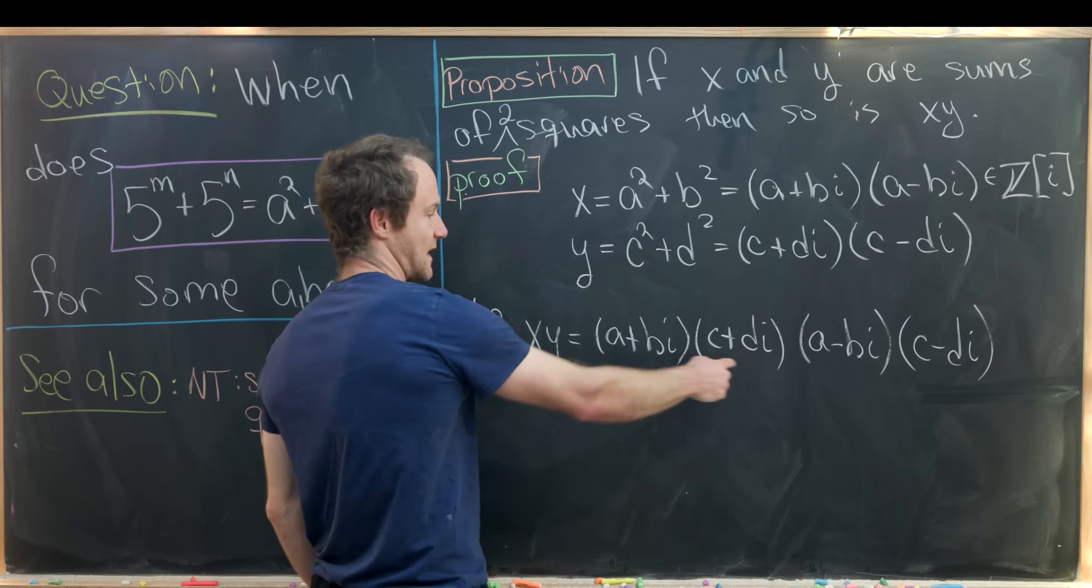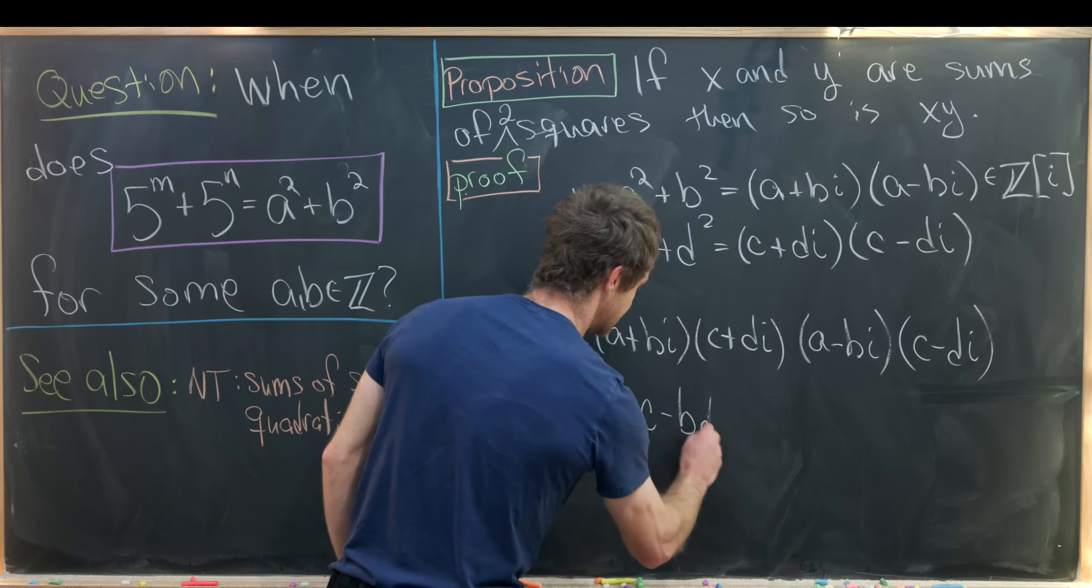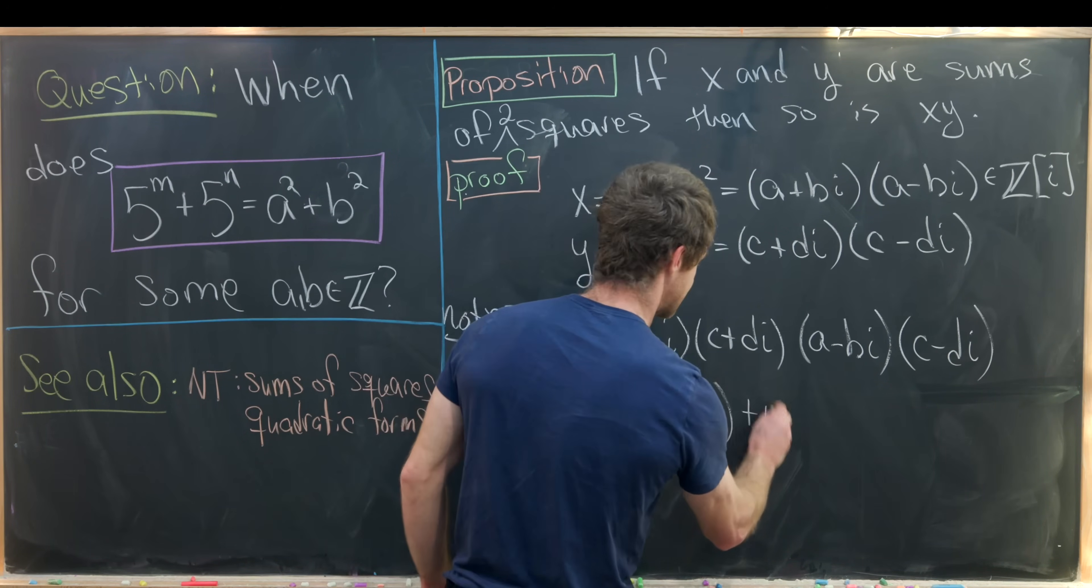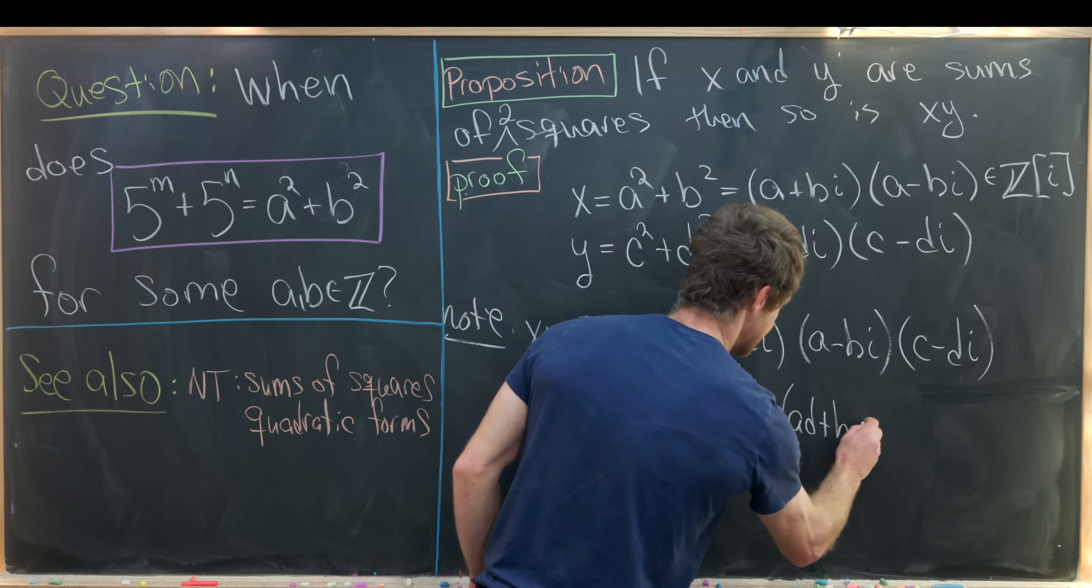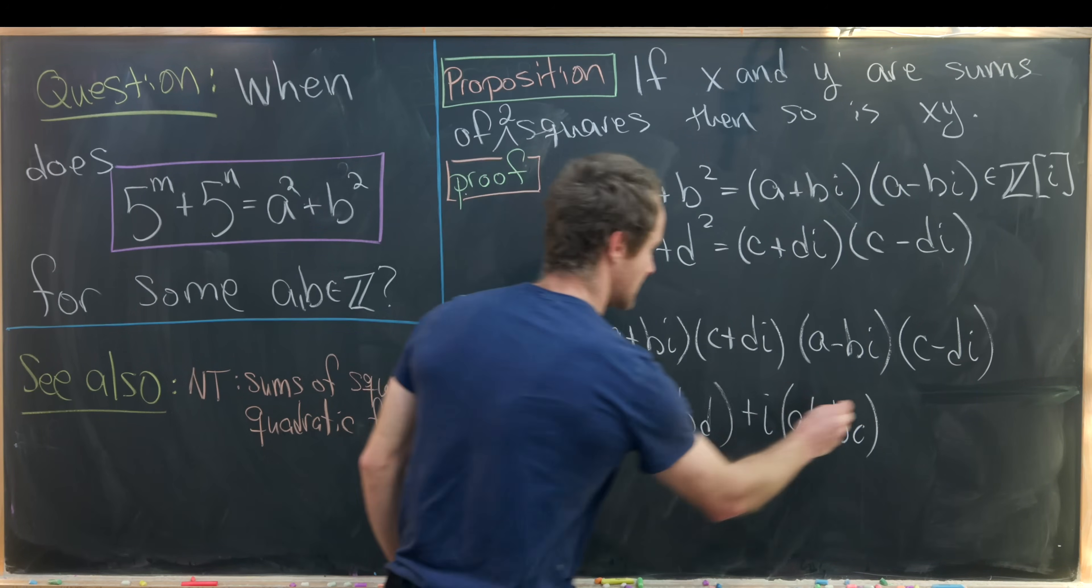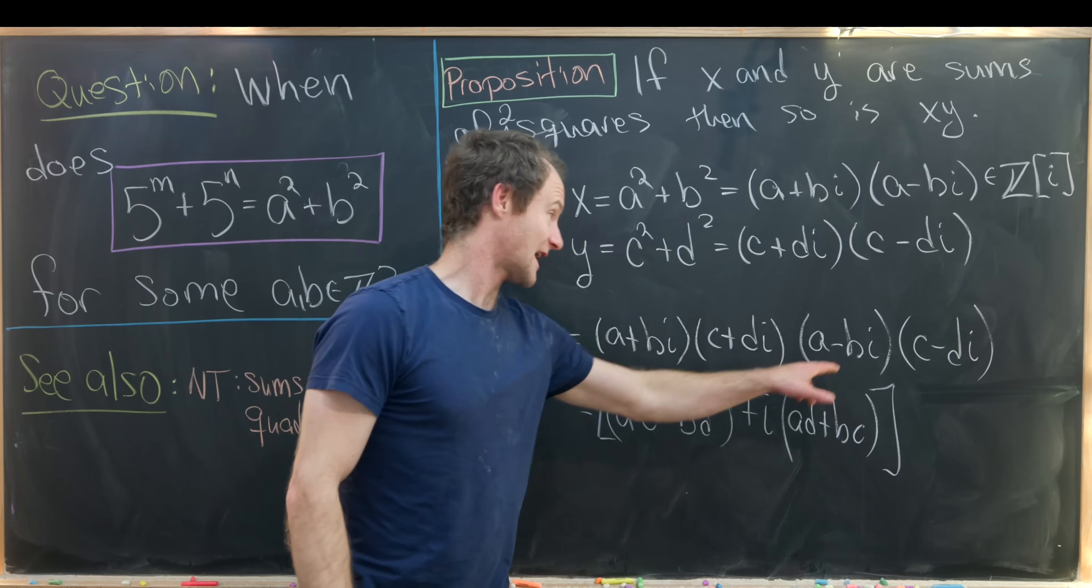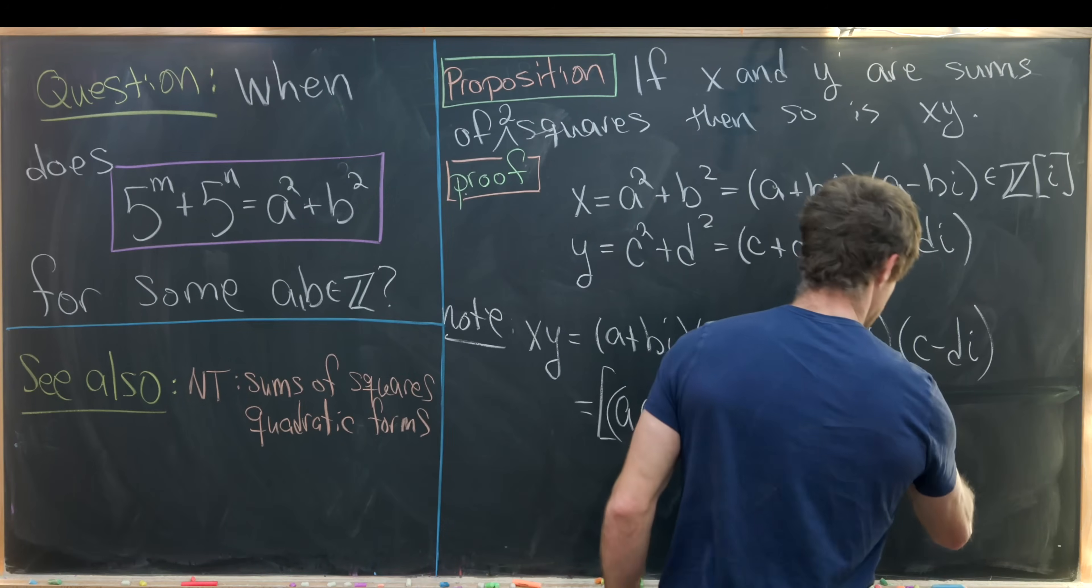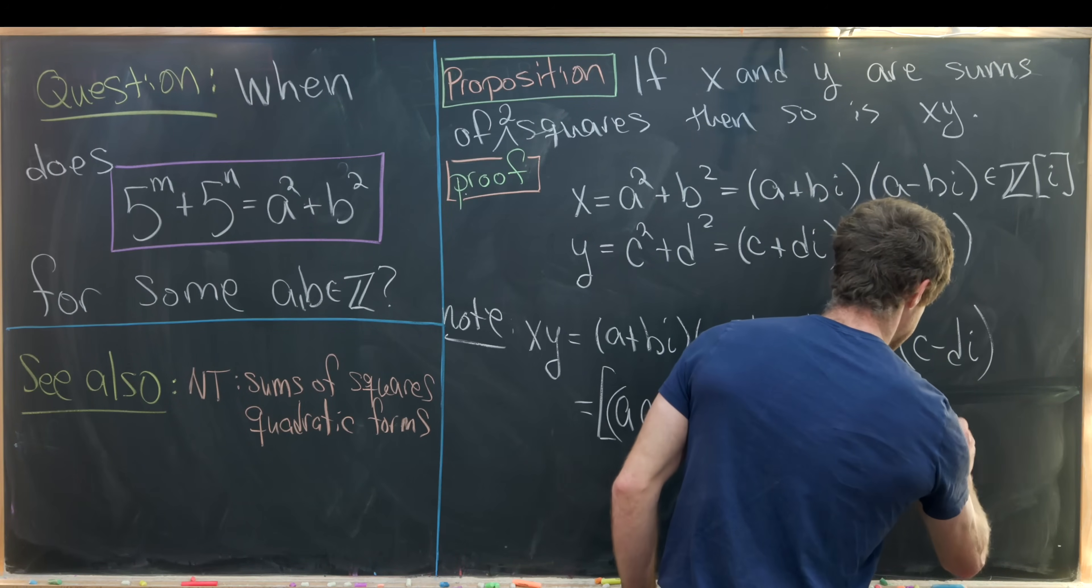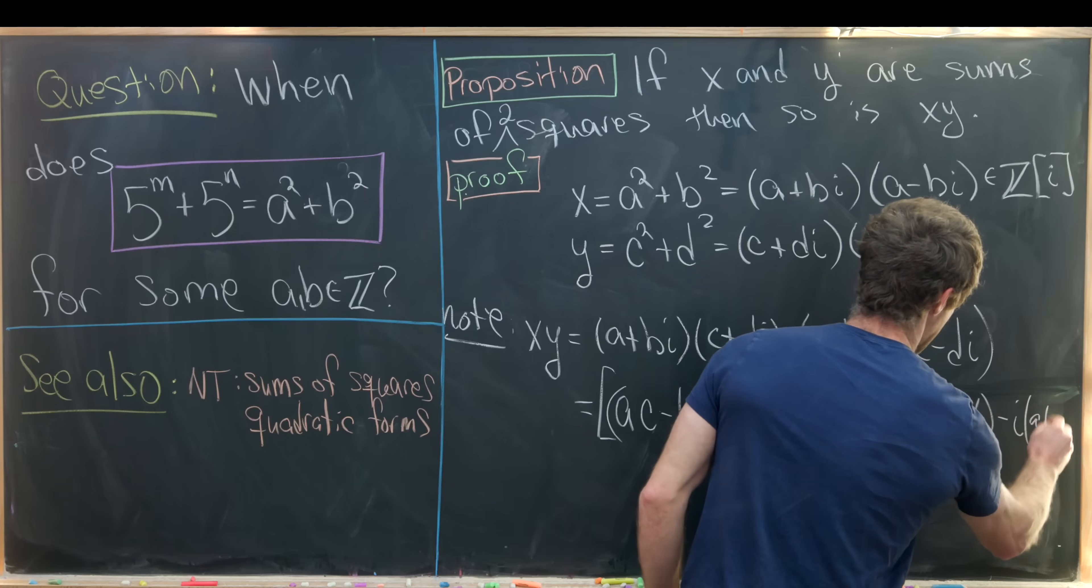Now let's multiply these two together. That'll give us ac minus bd plus i times ad plus bc. So that's what we get from that. And then we get in fact the complex conjugate of this for this last part. So that'll be ac minus bd minus i times ad plus bc. Great.